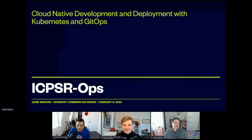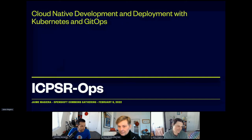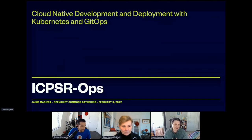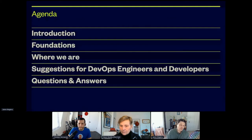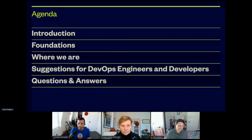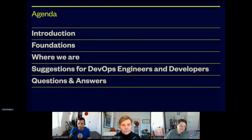So, Cloud Native Development and Deployment with Kubernetes and GitOps — what we're calling ICPSR Ops. I am Jamie McGarrah. The agenda for this quick talk is an introduction and some foundations, where we are at ICPSR, some suggestions for DevOps engineers and developers, and then question and answers will be moved to the section at the end.